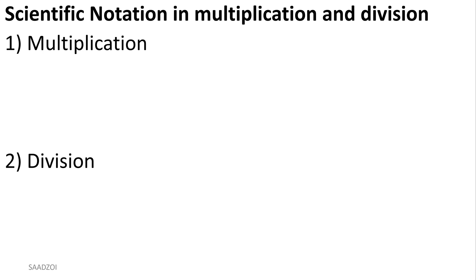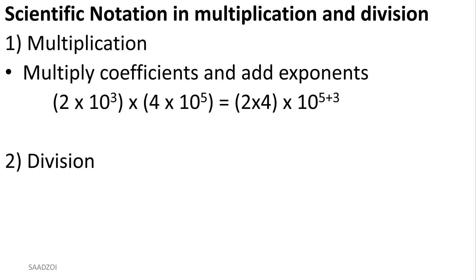Now let's do multiplication and division. Now that you have a basic understanding of scientific notation and sig figs, how do you do math with them? When you multiply numbers in scientific notation, you multiply the coefficients and you add the exponents. That's all it is. So two times four, then add the exponents five and three, which gives you 10 to the eighth. Multiply the coefficients, add your exponents — there's your answer in scientific notation.